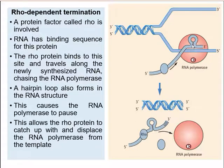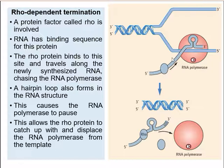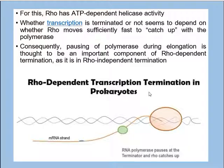When the loop forms, the RNA polymerase is paused — it cannot move further — so the RNA polymerase is slowed down, allowing rho to chase it and come near it. This allows the rho protein to catch up with the RNA polymerase and displace it from the template strand. The rho protein can displace the RNA polymerase because it has ATP-dependent helicase activity, which also allows it to dislodge the mRNA from the DNA. Whether transcription is terminated depends on whether rho moves fast enough to catch up with the polymerase.